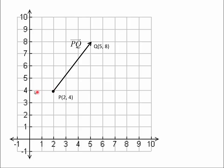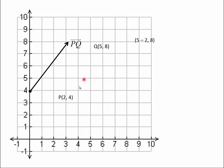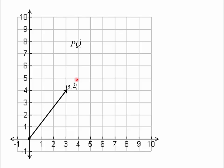It might be simpler if we could start it at the origin. So let's do that. Let's take this vector and subtract 2 — just move everything over 2 units. That's like taking the 5 component from the terminal point and subtracting the 2 from the initial point. Notice 5 minus 2. That moves every point over 2 units to the left. Now we take 8 minus 4 — shift everything down 4 units. Now the vector ends at a terminal point of 3, 4, with an initial point of 0, 0.